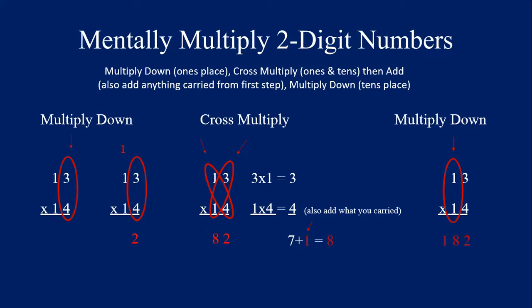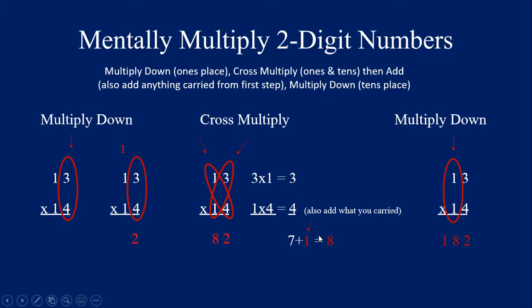Let me go through these steps again — I know it looks like a lot at first, but the more you practice it the easier it will become. We have 13 times 14. First step: multiply down in the ones column — 3 times 4 is 12, leave your 2, carry your 1. Next step: cross multiply and add — 3 times 1 is 3, 1 times 4 is 4, add those together to get 7, then add the 1 that we carried — 7 plus 1 equals 8, that's the second number in our answer. Last step: multiply down in the tens place — 1 times 1 is 1, that's the last number. 182 is the correct answer. Don't forget to add anything that you carry — that's a place where you might get the wrong answer, so be mindful of that.